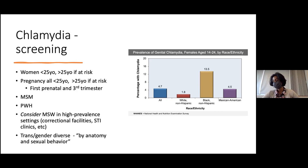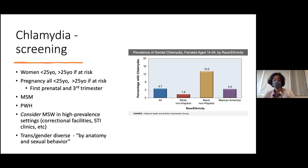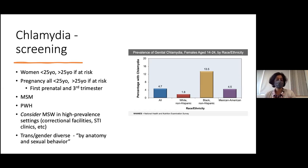Men who have sex with men should be screened at least annually at all sites of sexual contact: urethral screening for insertive sex, rectal screening for receptive sex. Pharyngeal screening for chlamydia is not recommended for any population due to uncertain clinical significance. About 70% of gonorrhea and chlamydia infections in MSM would go undetected without site-based screening. People with HIV should be screened at least annually. For trans and gender-diverse individuals, the guidance is to screen by anatomy and by site based on sexual behavior.